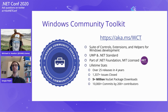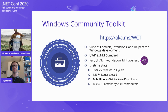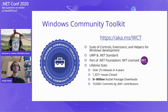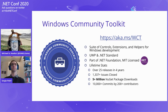The Windows Community Toolkit is a suite of controls, extensions, and helpers for Windows development, though we're not just for UWP developers. We have a lot more .NET standard libraries as well now, such as the MVVM Toolkit we're going to be talking about today. We are part of the .NET Foundation, MIT licensed, and all our code is up on GitHub, open source. We've had over 25 releases in the last four years, closed over a thousand issues, and have had millions of NuGet package downloads with many commits by hundreds of contributors.